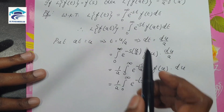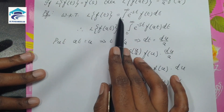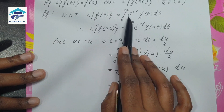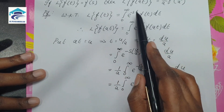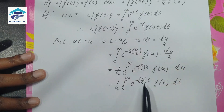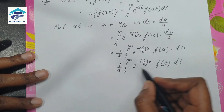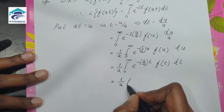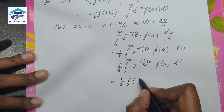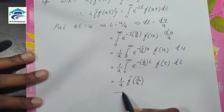Now compare this with the Laplace transform formula: L of f(t) equals the integral from 0 to infinity of e to the power minus st times f(t) dt. Instead of s we have s/a and everything else remains the same. So this can be written as (1/a) F̄(s/a), and hence the proof.